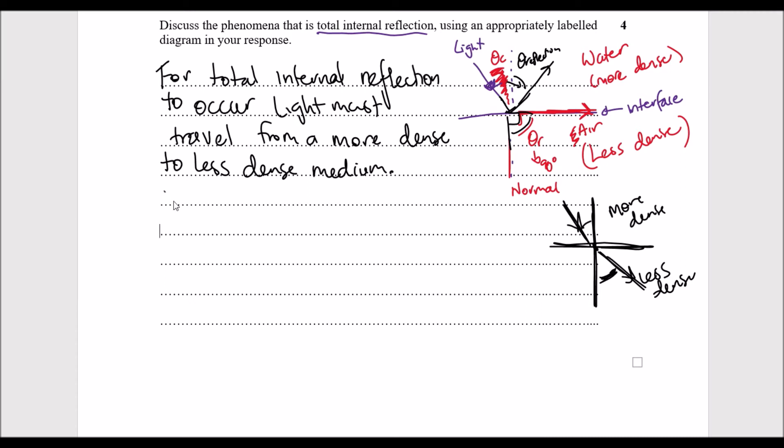The reason being is, well we can say that the incident angle will be smaller than our refracted angle. Light bends away from the normal line.